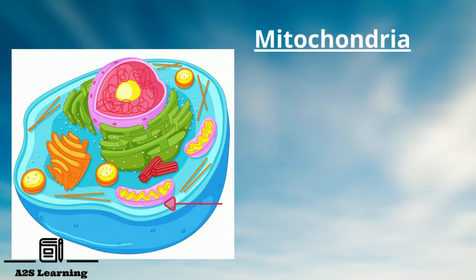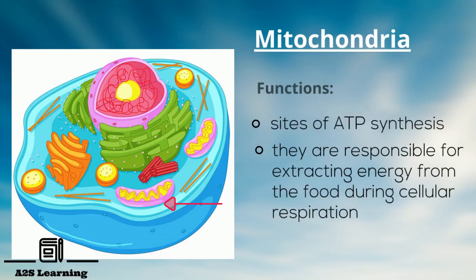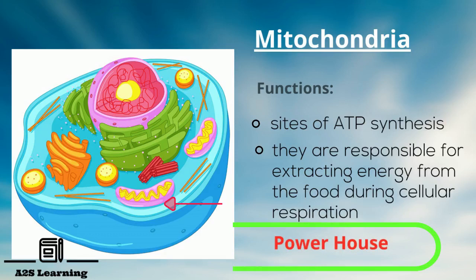Mitochondria: Mitochondria are relatively large organelles of varying shapes distributed uniformly in the cytoplasm. Mitochondria are sites of ATP synthesis. They are responsible for extracting energy from the food during cellular respiration. Hence, they are called the powerhouse of the cell.